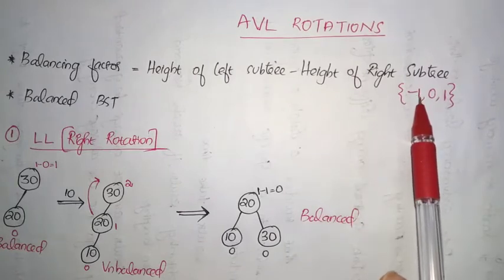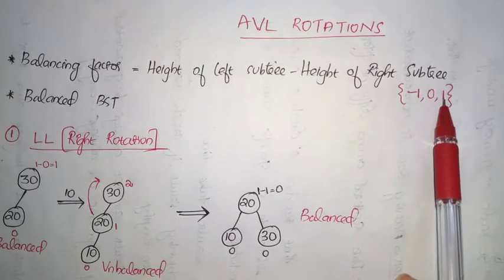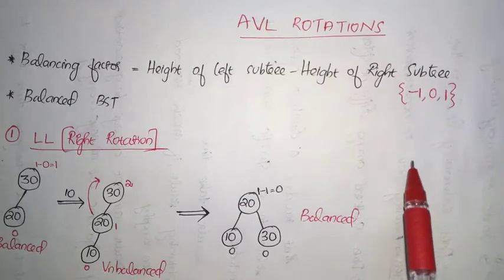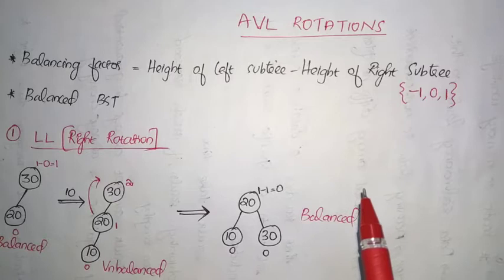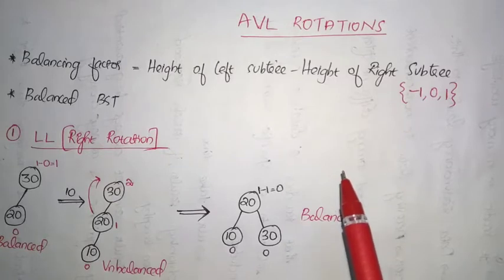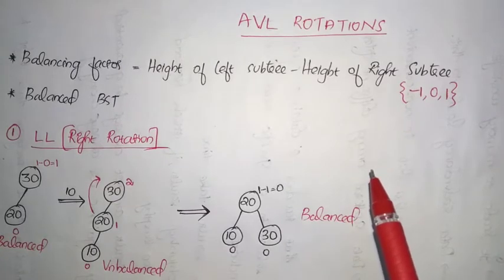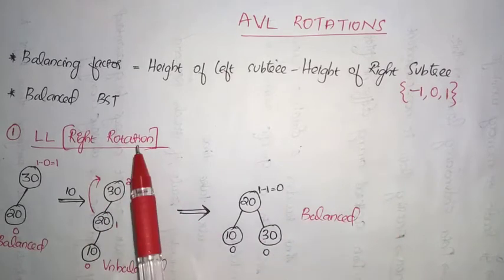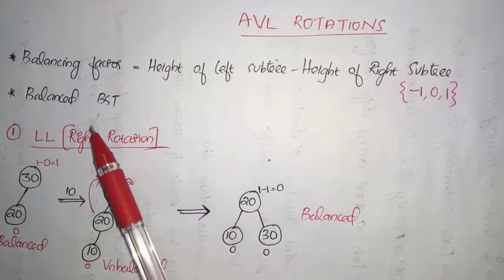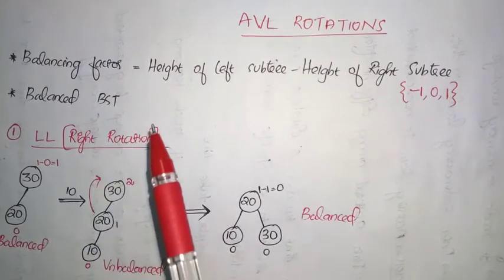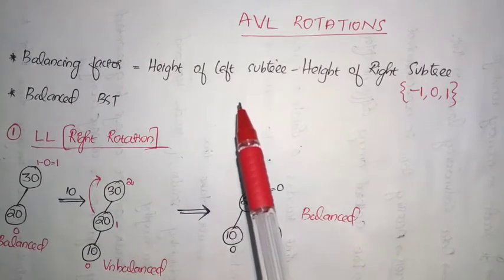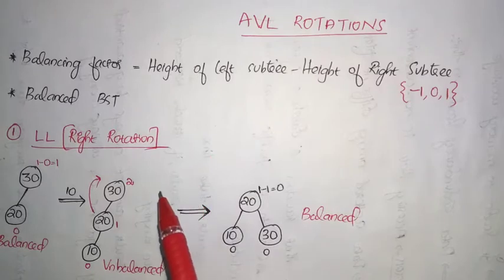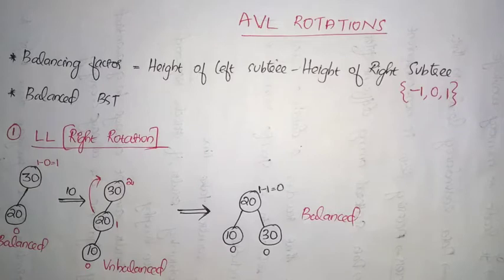If a node has a balancing factor lesser than minus 1 or greater than 1, we consider that node to be a node that causes imbalance in the tree. At that specific node we have to perform some rotations. The AVL tree is nothing but a balanced binary search tree, so all concepts regarding the binary search tree are also applicable in AVL trees. Now let's see the various rotations performed in an AVL tree to make a binary search tree balanced.